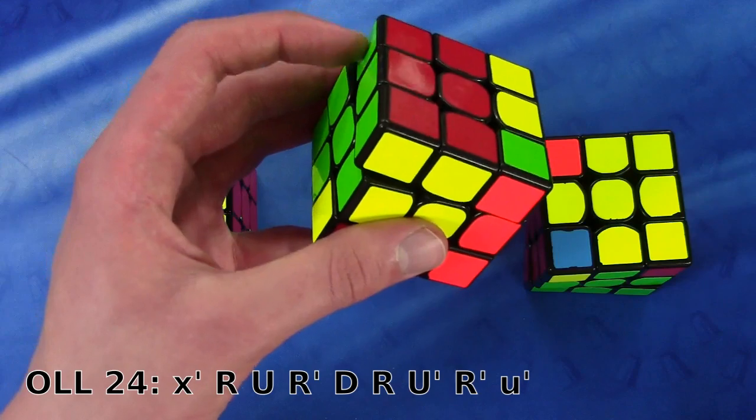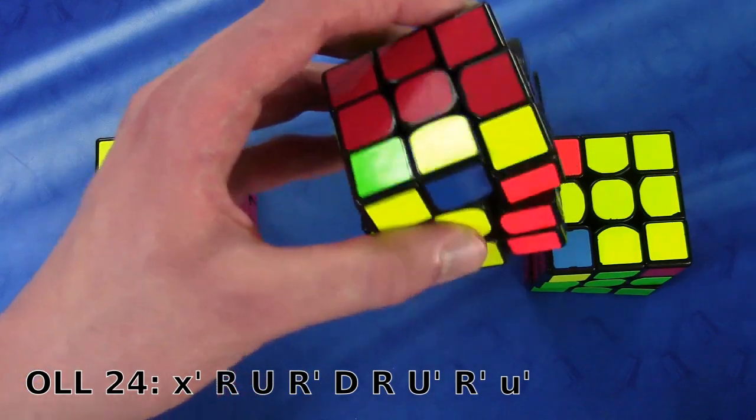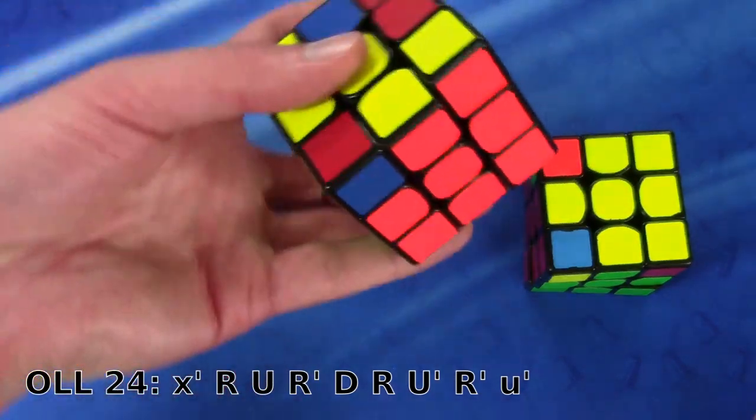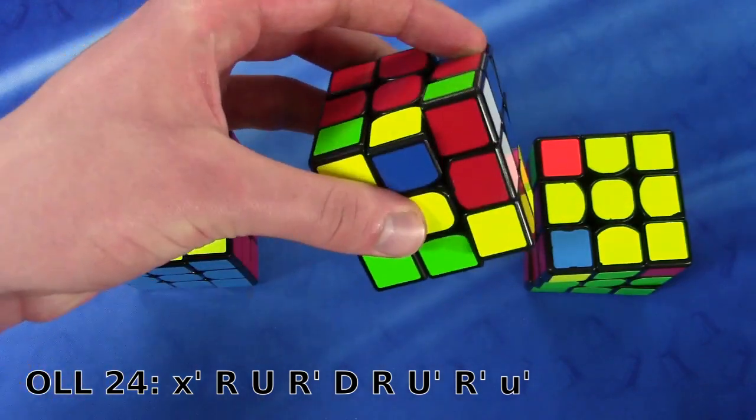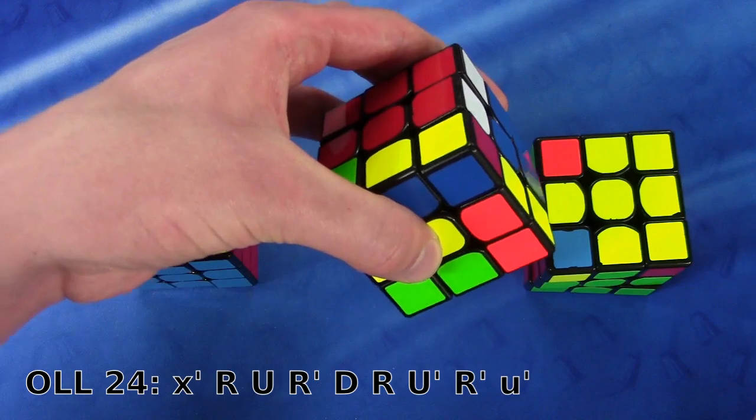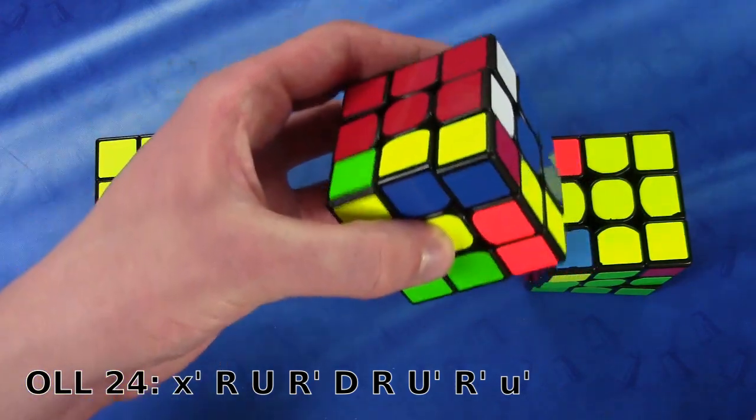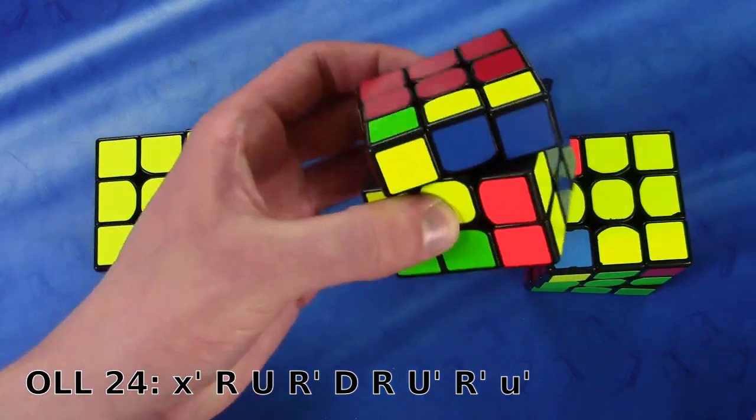And then I'm going to go like this. And then I'm going to use my index finger to do the U and the R' at the same time. And then I'm going to use my pinky to do the D as if I was doing an R. And now my index finger is still here because I'm going to have to do this move like this.